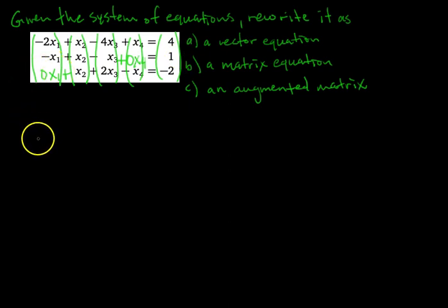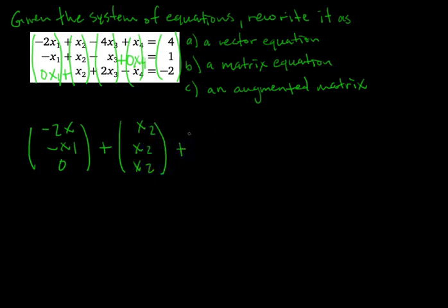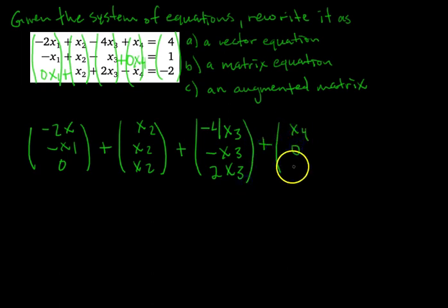Okay, to write it as a vector equation, we're just going to do just that. So we have our first vector, looks like this, we add it to our next vector, which is all x2s, and then we add. Keep in mind that you always want to have these plus signs, and then whenever there's a negative coefficient, you account for that inside the vector itself. Here is our third vector, and then we add x4, 0, and negative x4, and this is equal to our right-hand side, which is 4, 1, negative 2.